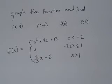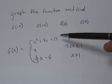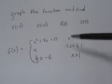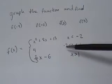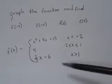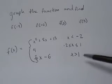Today we've been asked to graph the piecewise function and find f(-4), f(-2), f(0), and f(5) if the piecewise function is defined by x² + 8x + 13 when x is less than -2, f(x) equals 4 when x is between -2 and 1, and f(x) equals 2/3x - 6 when x is greater than 1.